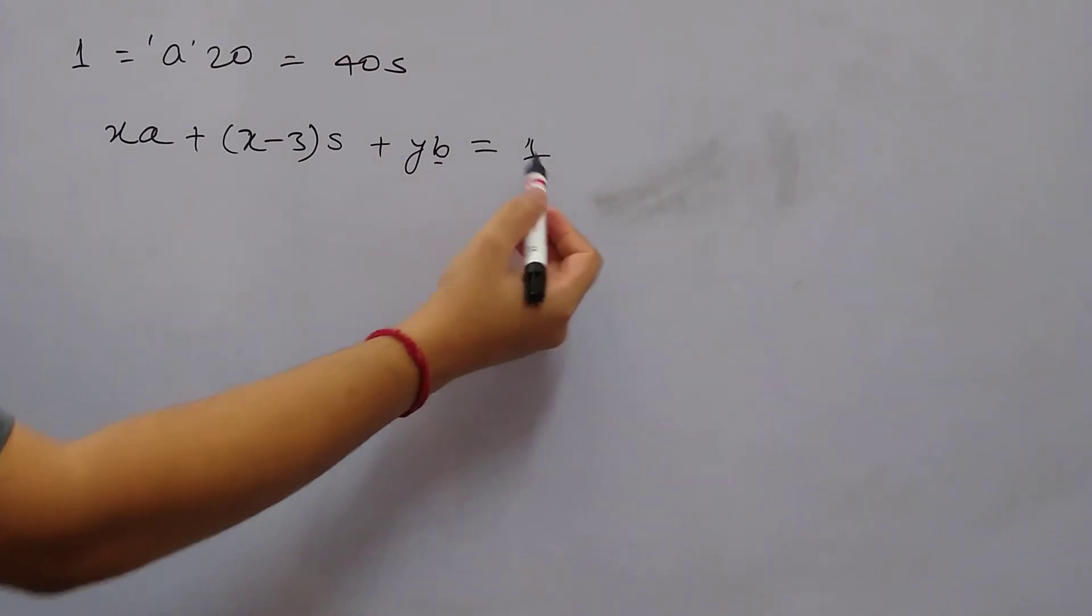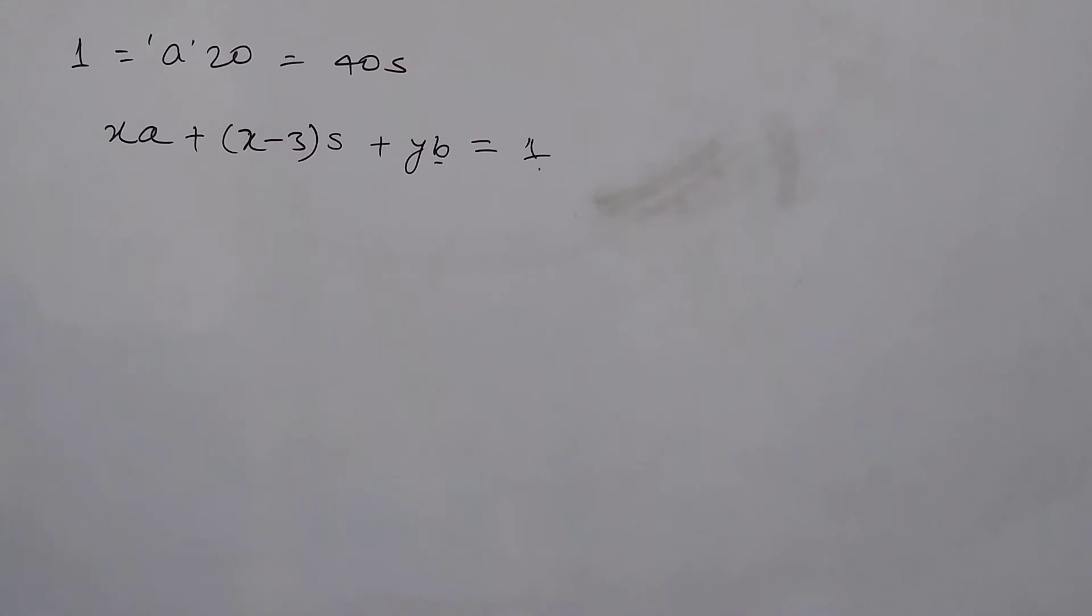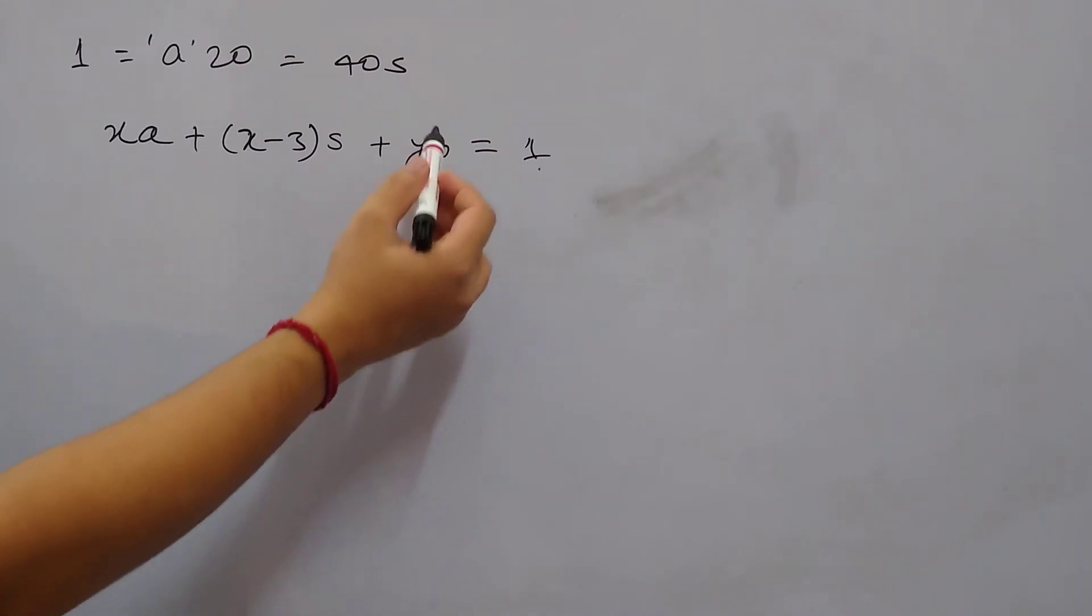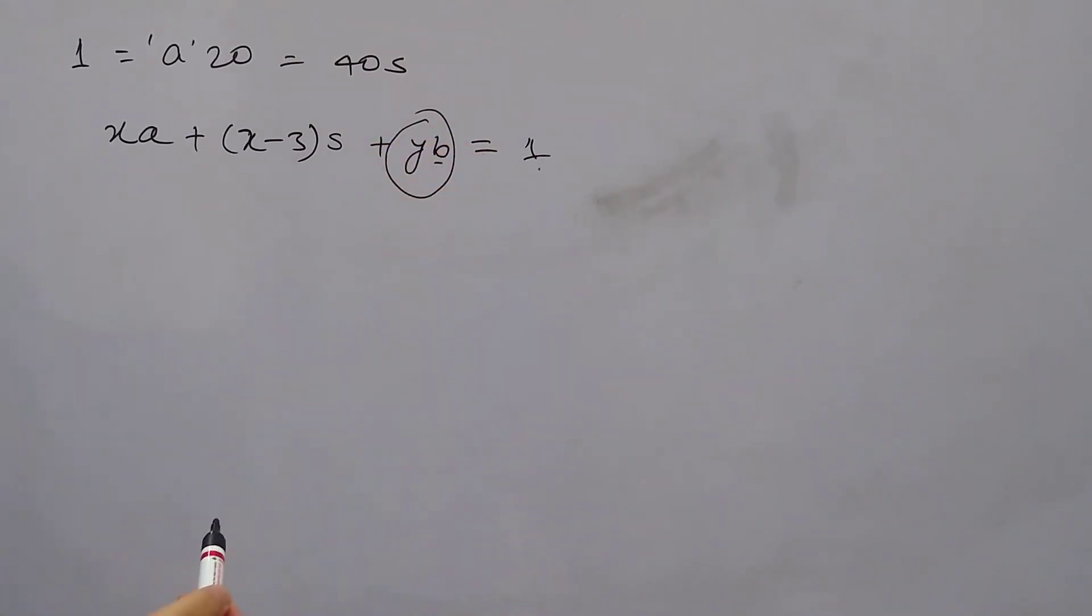So total work done is now one unit. Now the question says that this part is 10% of the job, so that means this part should be 90% of the job. So we can remove this and can rewrite this as 90% of one.